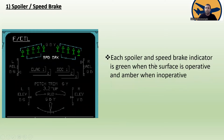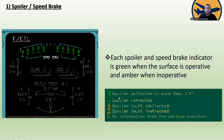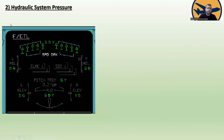For topic one — spoiler and speed brakes — each spoiler and speed brake indicator is green when the surface is operative and amber when inoperative. When a spoiler is deflected by more than 2.5 degrees, a specific symbol appears. Other symbols indicate: spoiler retracted, spoiler fault deflected, spoiler fault retracted, and no information from the surface position.